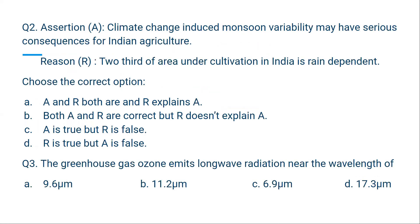Assertion A: Climate change-induced monsoon variability may have serious consequences for Indian agriculture. This is true — if there is a change in climate, there will be a change in monsoon, and that will impact India. Reason: Two-thirds of the area under cultivation in India is rain-dependent. This is also true. So the correct option is A — both A and R are correct and R explains A.